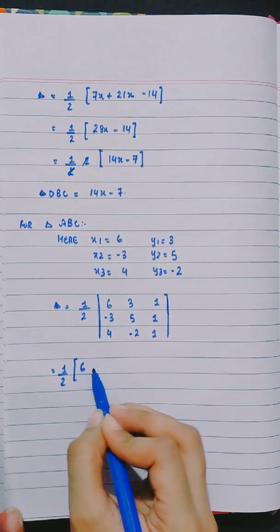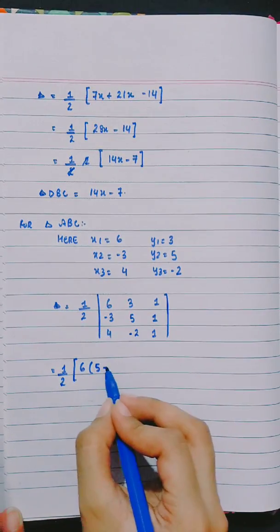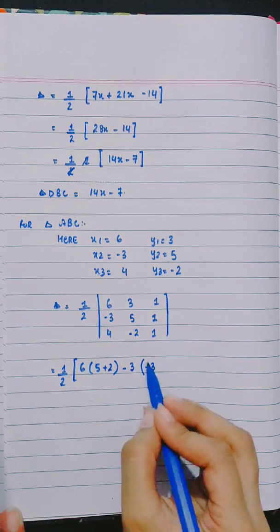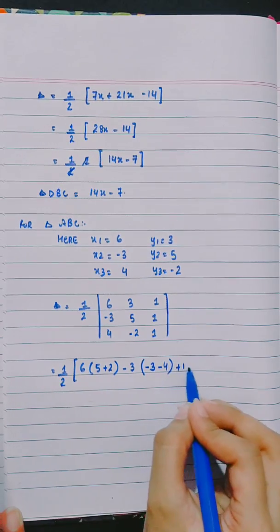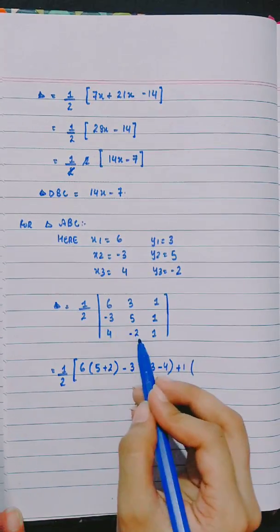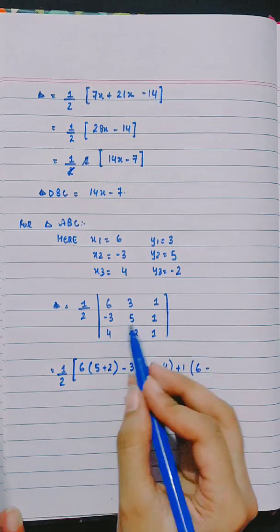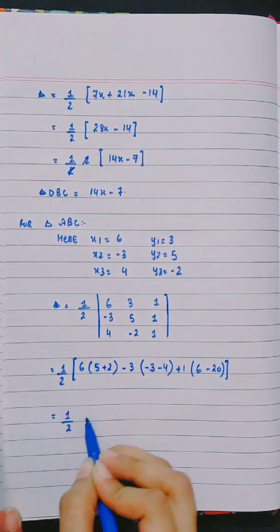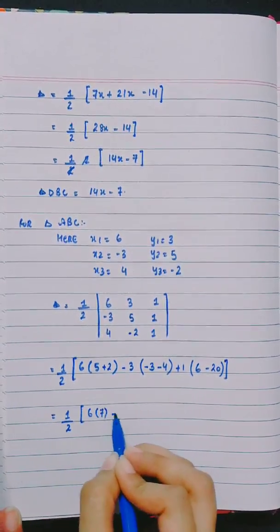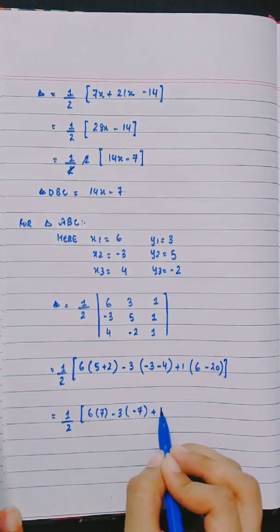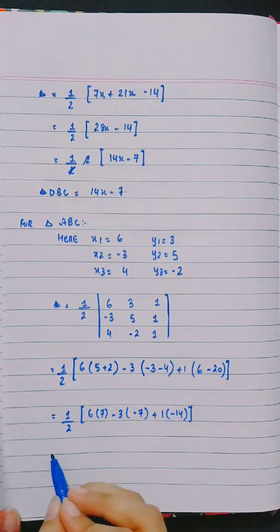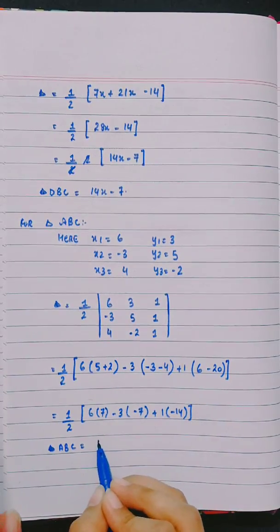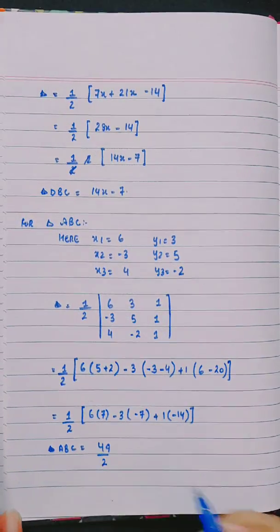Half of [6(5+2) - 3(-3-4) + 1(-6-20)] equals half of [6(7) + 3(7) + 1(-14)] equals half of [42 + 21 - 14] equals half of 49. Area of triangle ABC is equal to 49 divided by 2.